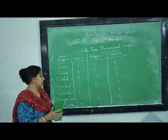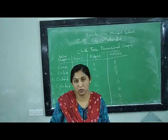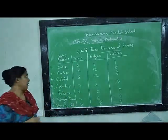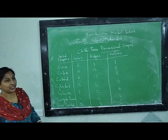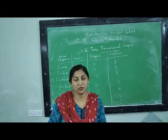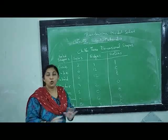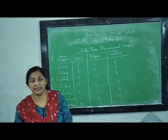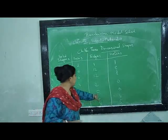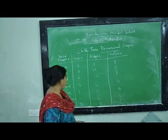Next comes the sphere. As you know, a sphere is a round shape — it is like a ball. It has only one face because it is fully curved. It has no edges and no corners, so we write zero edges and zero vertices.